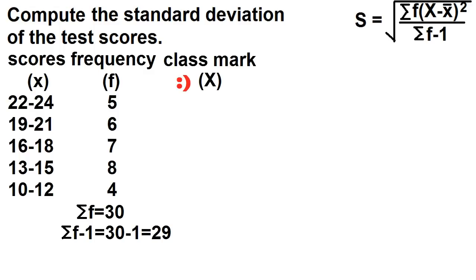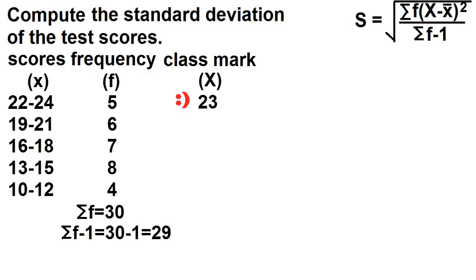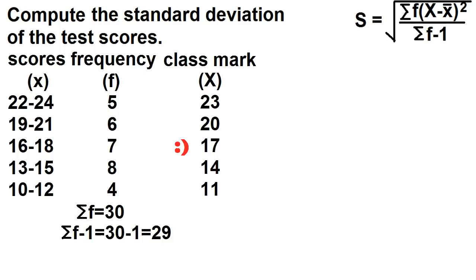Let's add a column for class mark. The class mark is just the midpoint of the class interval — add the lower limit and the upper limit and divide by 2. 22 plus 24 is 46 divided by 2 is 23. 19 plus 21 is 40 divided by 2 is 20. 16 plus 18 is 34 divided by 2 is 17. 13 plus 15 is 28 divided by 2 is 14. 10 plus 12 is 22 divided by 2 is 11.